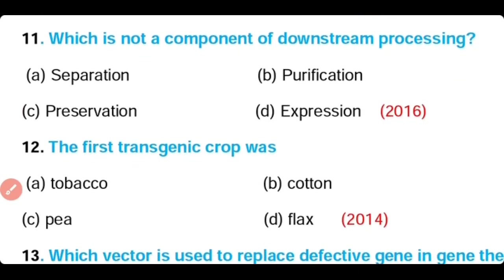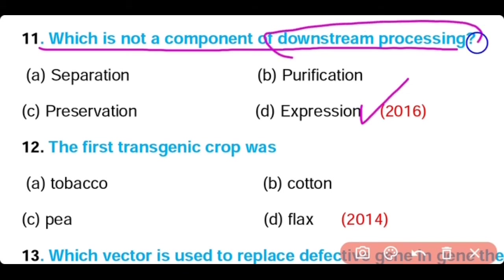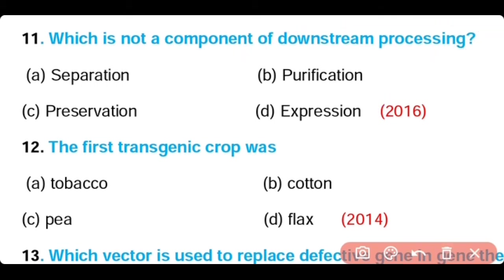Question 11: Which is not a component of downstream processing — separation, purification, preservation, or expression? The correct answer is option D. Downstream processing involves purification, separation, and preservation of useful products. Expression is not a component of downstream processing.